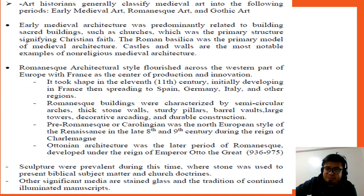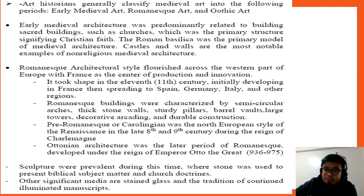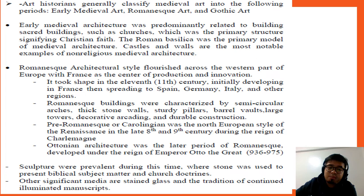Romanesque architectural style flourished across western Europe with France as the center of production and innovation. It took shape in the 11th century, initially developing in France, then spreading to Spain, Germany, Italy, and other regions. Romanesque buildings were characterized by semi-circular arches, thick stone walls, sturdy pillars, barrel vaults, large towers, decorative arcading, and durable construction. Pre-Romanesque, or Carolingian, was the North European style of the Renaissance in the late 8th and 9th century during the reign of Charlemagne. Ottonian architecture was the latter period, developed under Emperor Otto the Great. Sculptures were prevalent, using stone to present biblical subjects. Other significant media included stained glass and illuminated manuscripts.